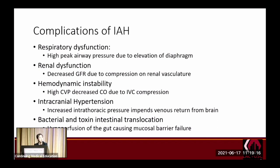You can also have intracranial hypertension. Elevated intra-abdominal pressures increase intrathoracic pressures, decreasing venous drainage from the head and causing intracranial hypertension. Additionally, compression on the bowel vasculature causes hypoperfusion and compromises the mucosal barrier, which can cause bacterial and toxin intestinal translocation.